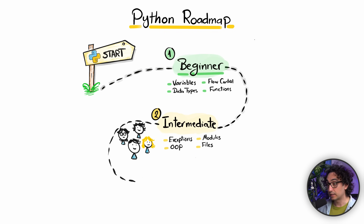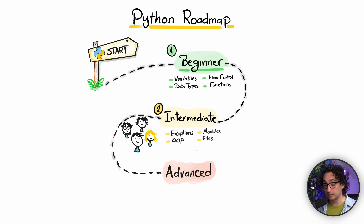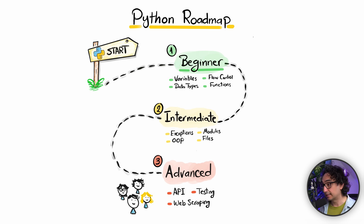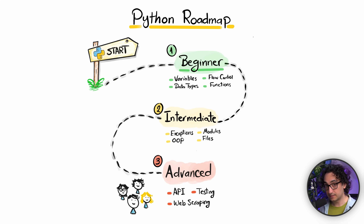After intermediate, everyone moves to the advanced level. Here you learn advanced techniques: connecting with APIs to grab data from the internet, testing your code, and scraping websites to collect data automatically. At this level you start doing real projects and solving real problems. These three levels — beginner, intermediate, and advanced — are the core of Python, and everyone must learn these techniques regardless of what they are building in the future.